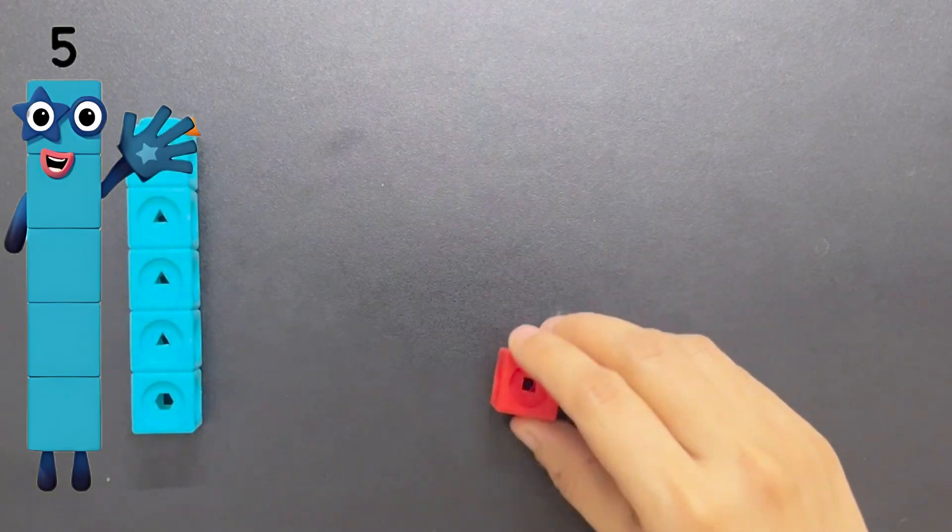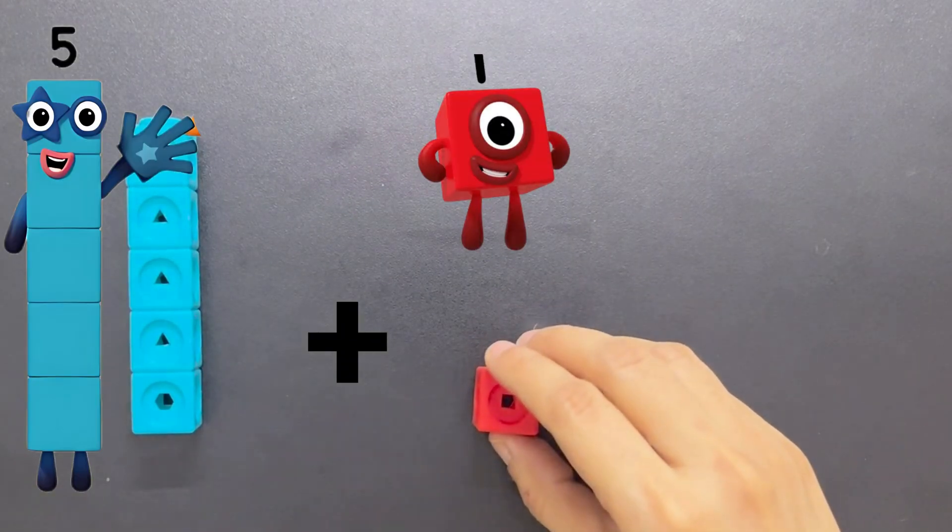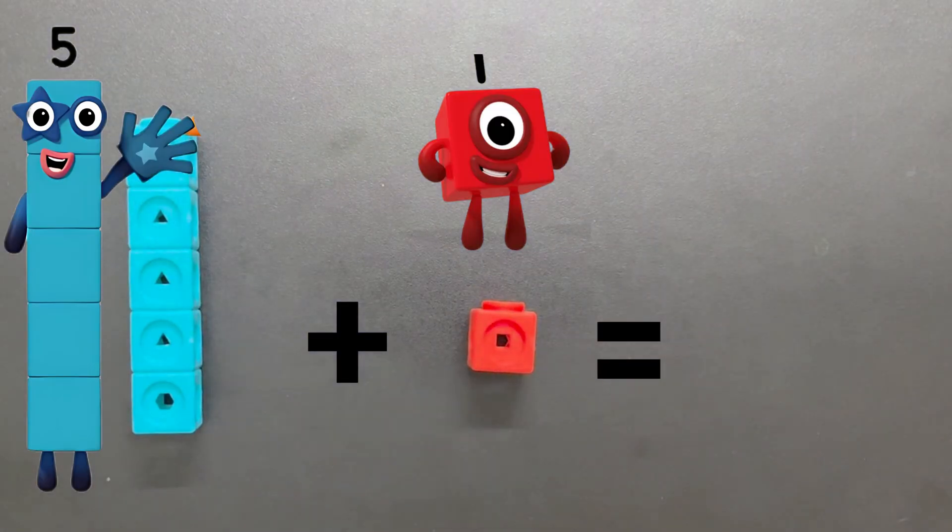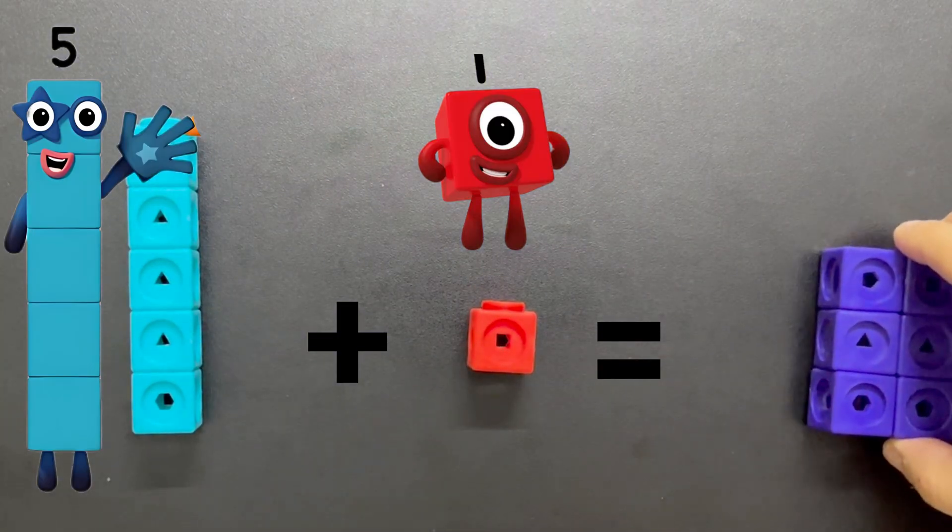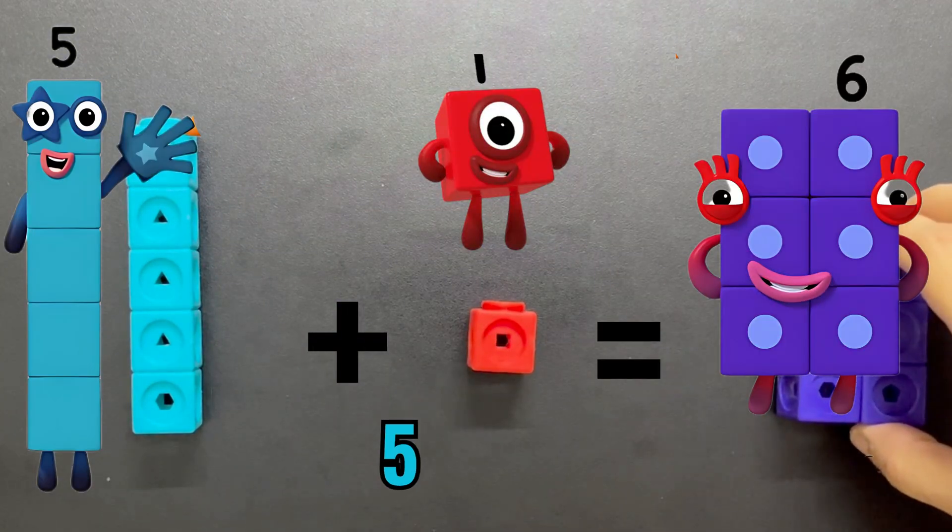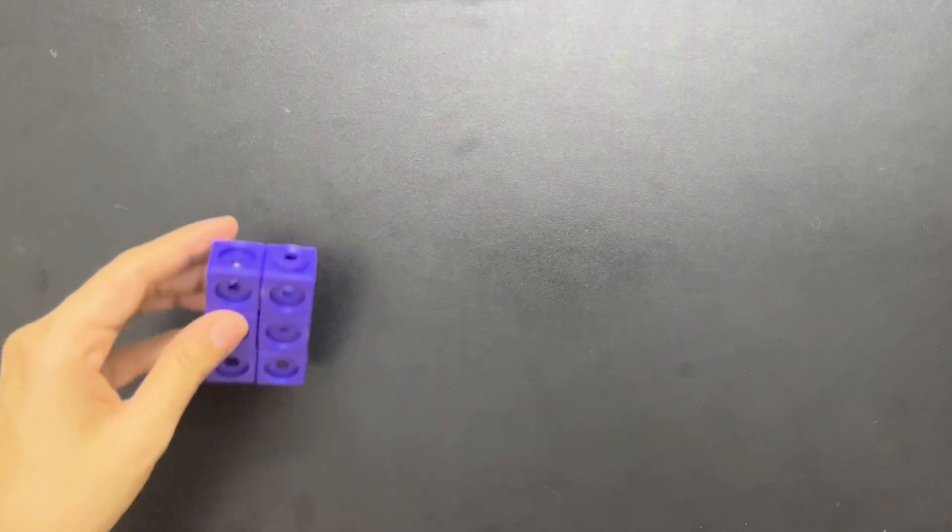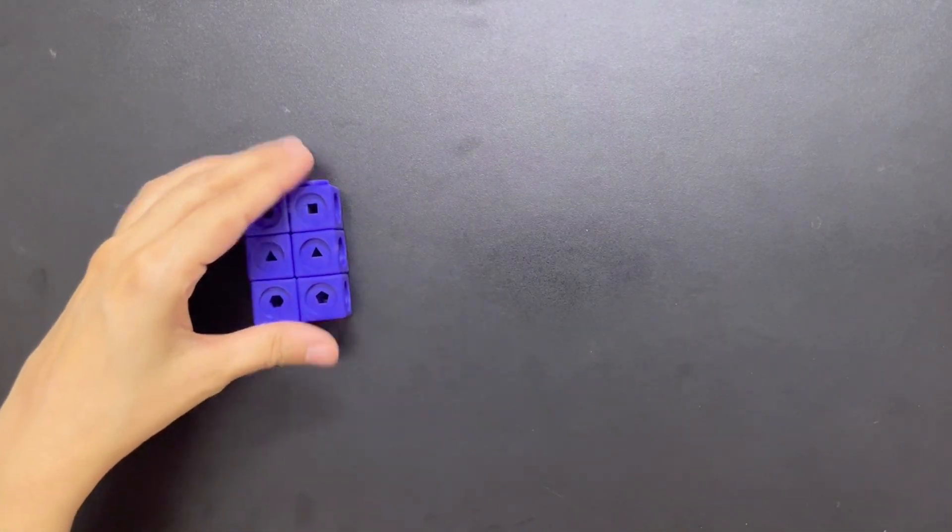Five plus one equals six. Number Six is full of energy and loves to roll. With even sides, she can form two rows of three or three rows of two, making her great at dice patterns. Six plus one equals seven.